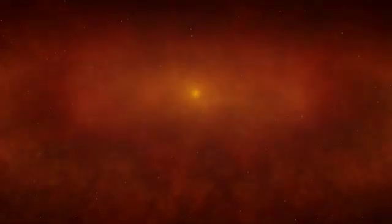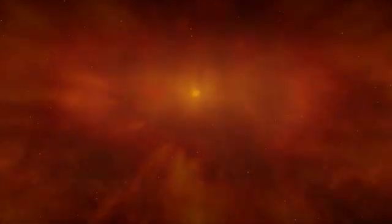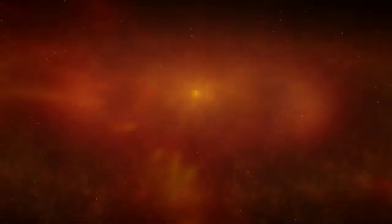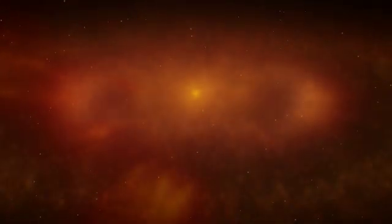4.6 billion years ago, our solar system started to form about two-thirds of the way out on one of the spiral arms of the Milky Way.